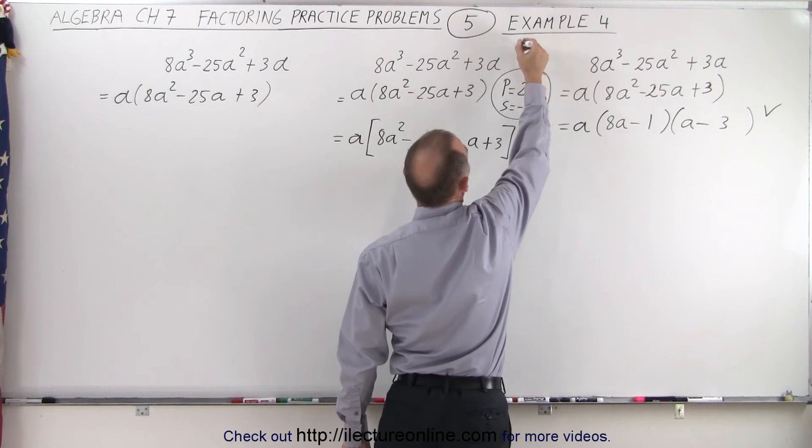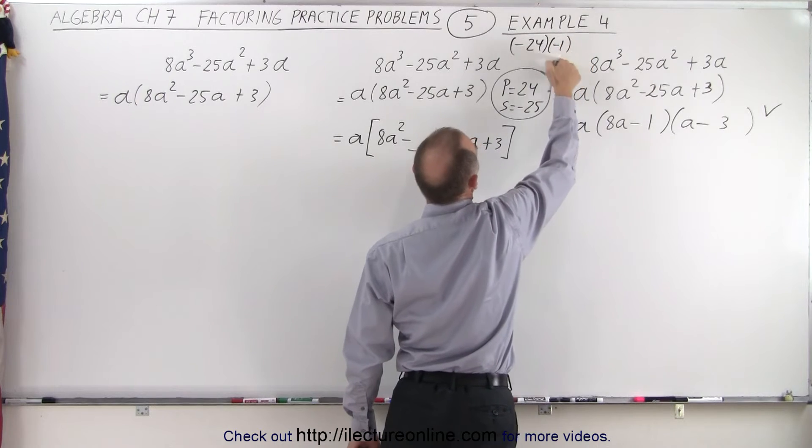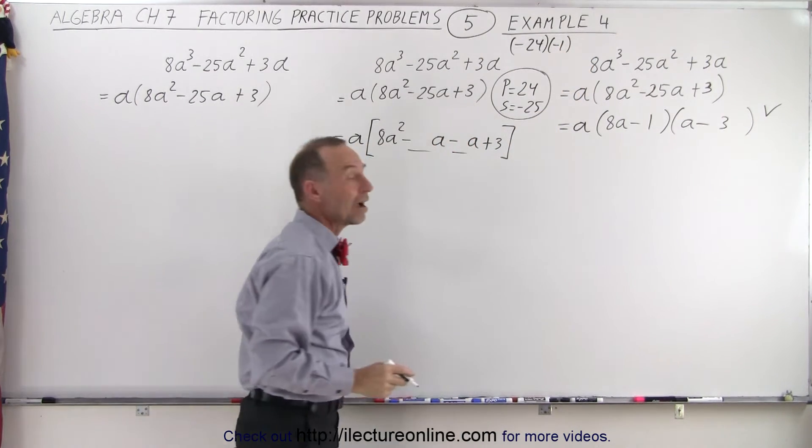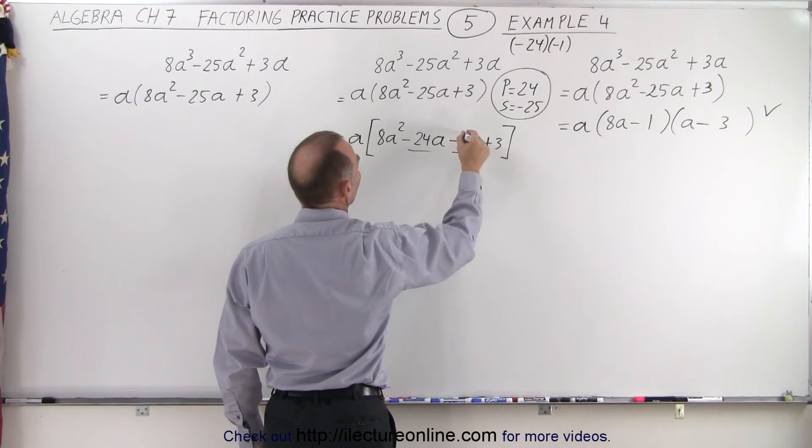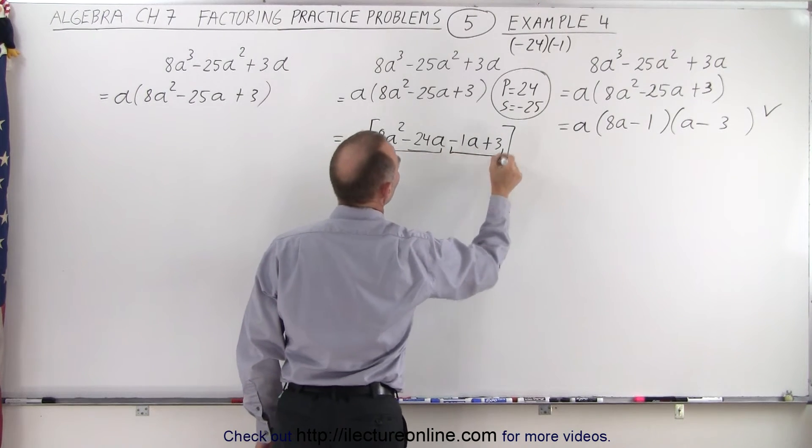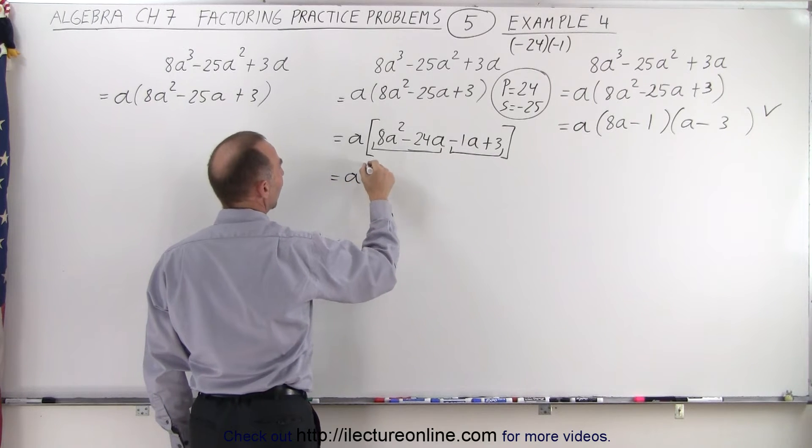The product is 24, and the sum is minus 25. So that means that minus 24 multiplied times minus 1 gives us positive 24. And when I add them together, I get negative 25. So the numbers are going to be 24 and 1. Now I'm going to group these together in groups of 2 and factor out what's common.